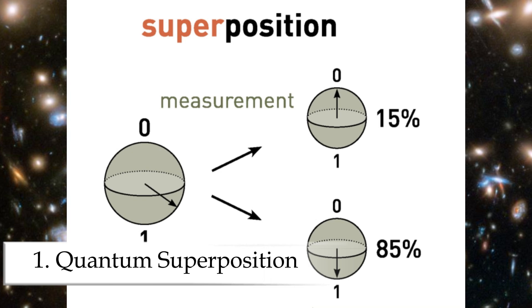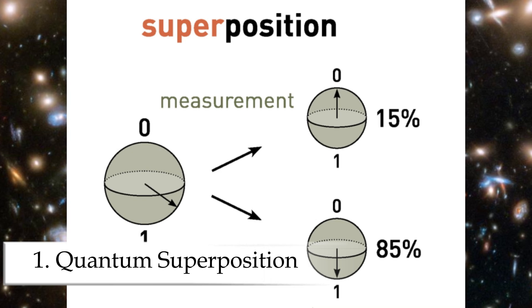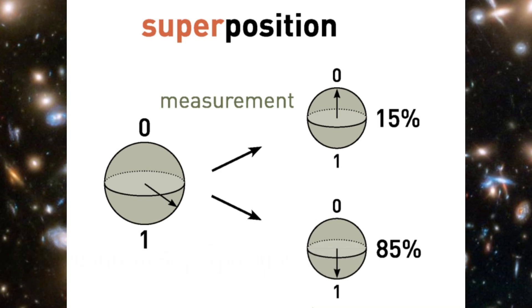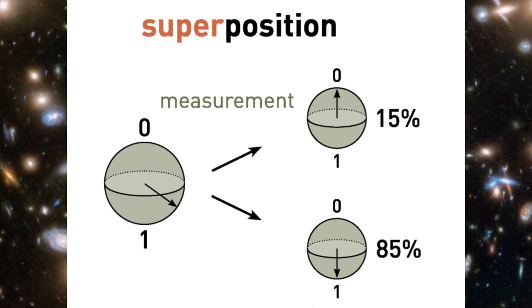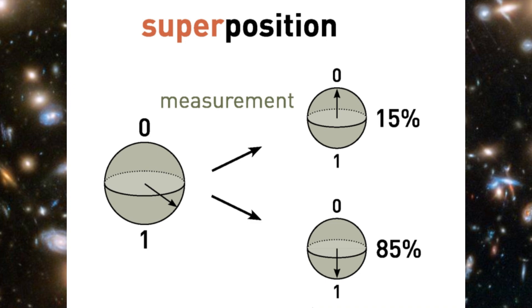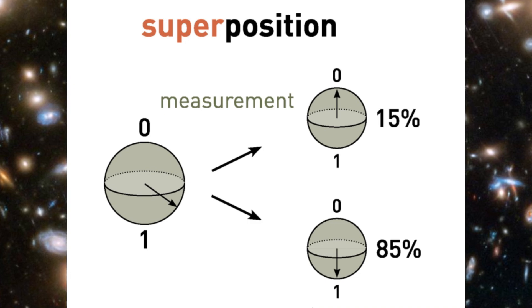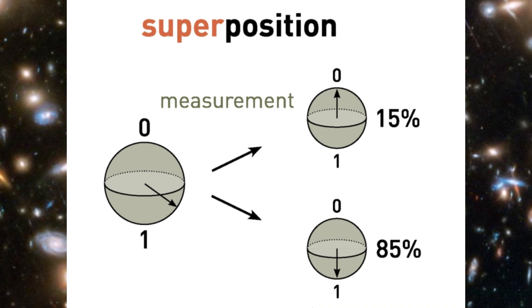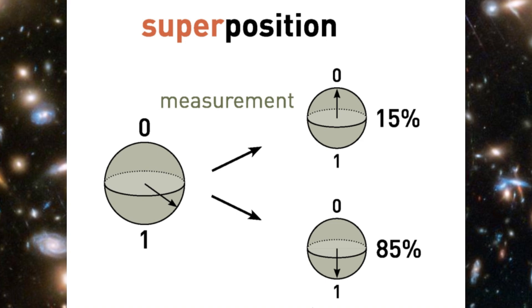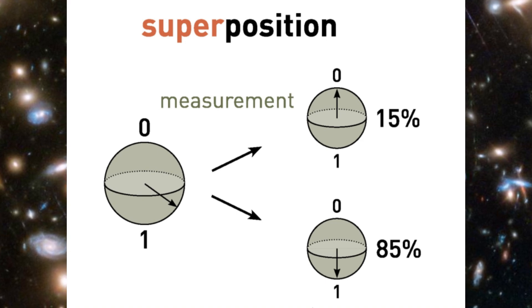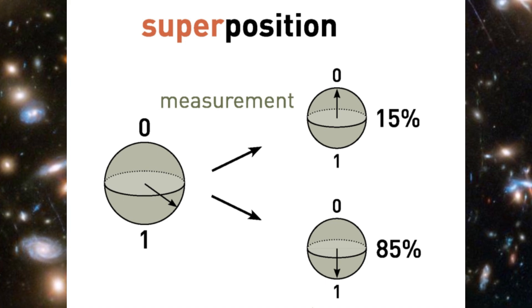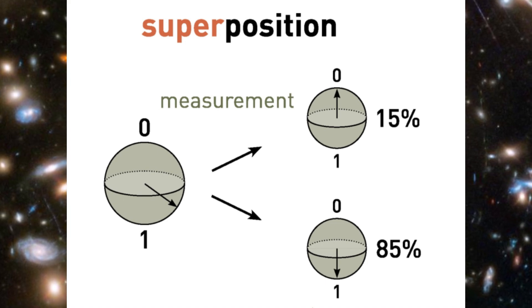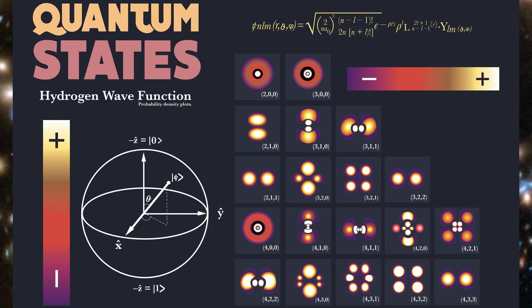Number one, quantum superposition. In the quantum world, particles aren't just here or there, they're both, until you look. Superposition is when a quantum object exists in all possible states at once. A photon can be horizontally and vertically polarized. An electron can be in two energy levels at the same time.